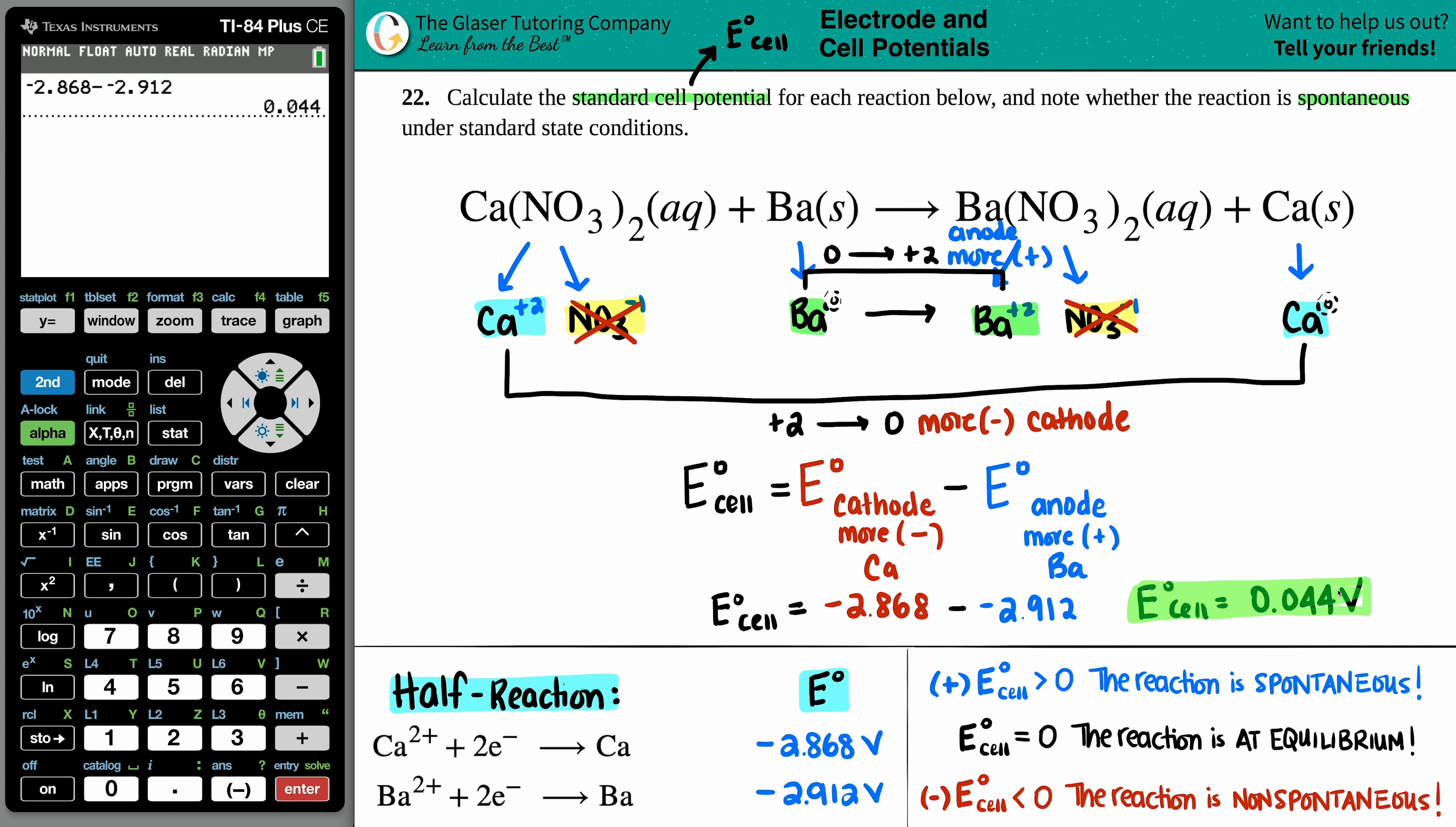Now, is this a spontaneous reaction or not? Well, now this comes down to just knowing the sign of your E cell. If it was a positive E cell, the reaction is spontaneous. If you got a negative E cell, the reaction is non-spontaneous. This value that I got was a positive value and positive E cells always mean that it's spontaneous. And that means that there is no additional amount of energy that is needed to make this reaction run. It just does it itself.